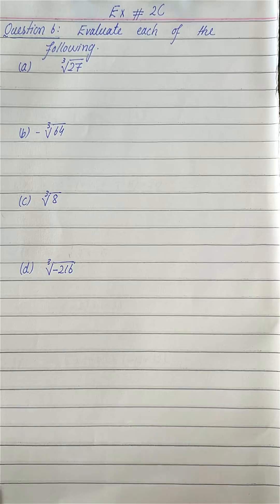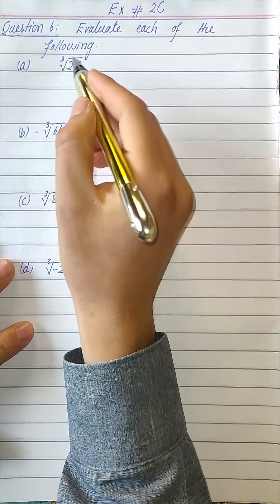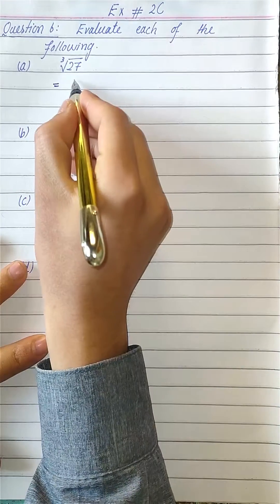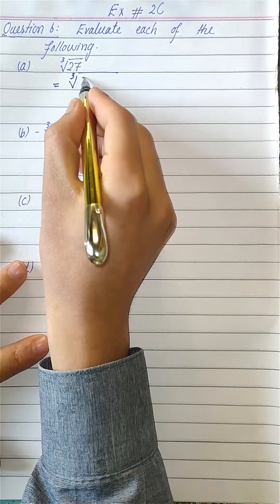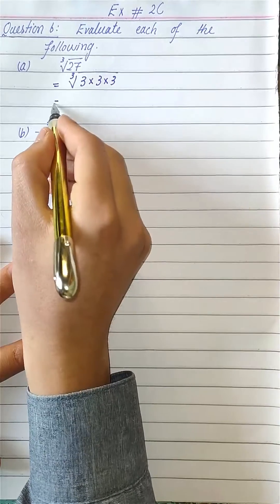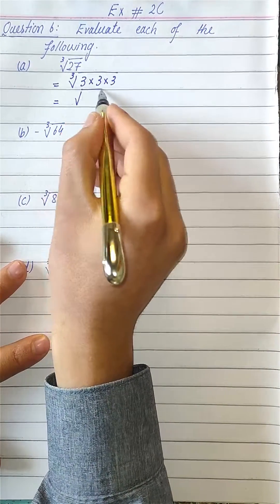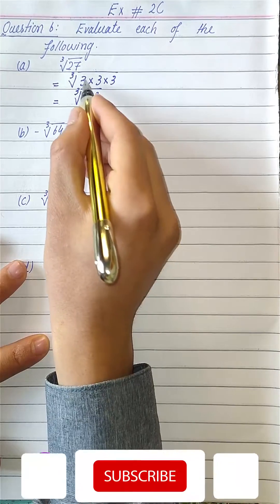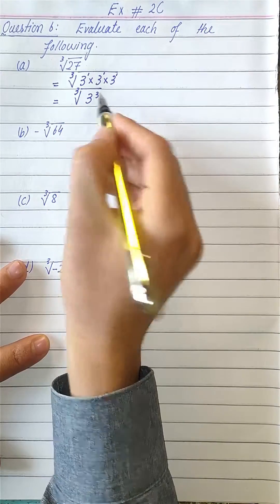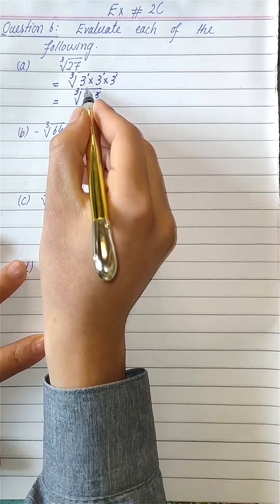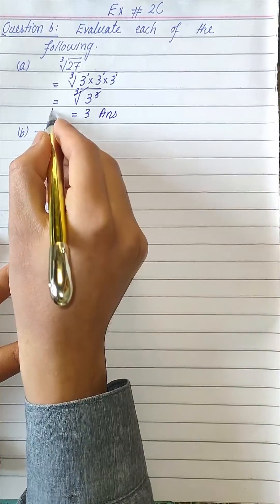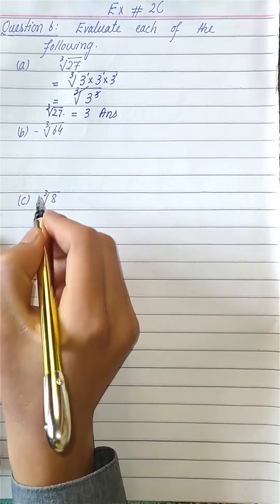Question number six from exercise two C: evaluate each of the following. We have to find the value of cube root of 27. Cube root of 27 can be written as 3 times 3 times 3, because 3 times 3 times 3 is 27. This can be written as 3 raised to the power 3, and the cube cancels with the cube root, leaving us with 3, which is our answer.